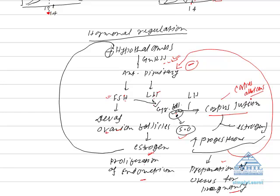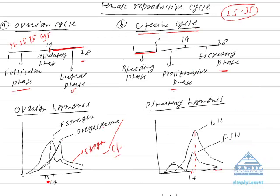And as soon as corpus luteum changes into corpus albicans, progesterone level falls. And when progesterone level falls, shedding of endometrium starts. It leads to the bleeding phase of the menstrual cycle.